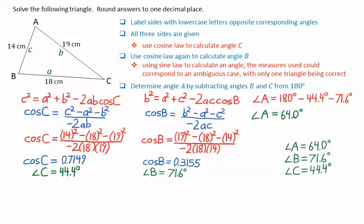We then have all three of the unknown angles. Angle A equals 64.0 degrees. Angle B equals 71.6 degrees. And angle C equals 44.4 degrees.